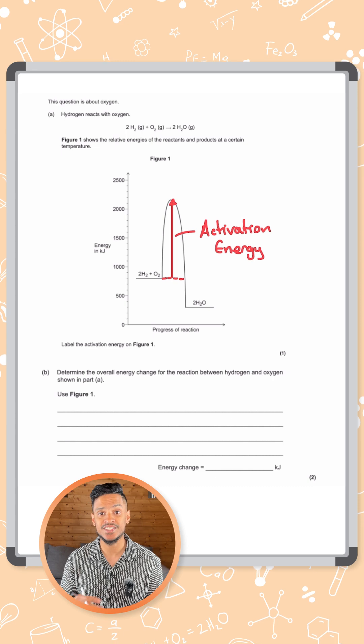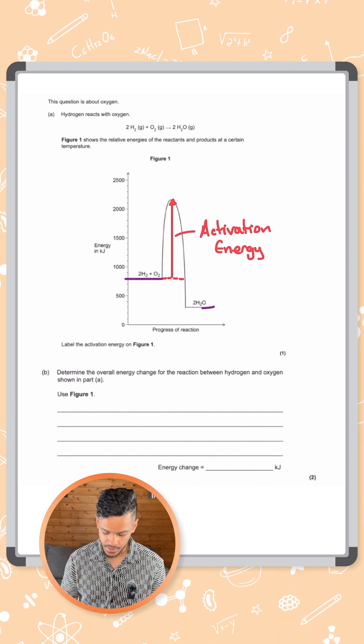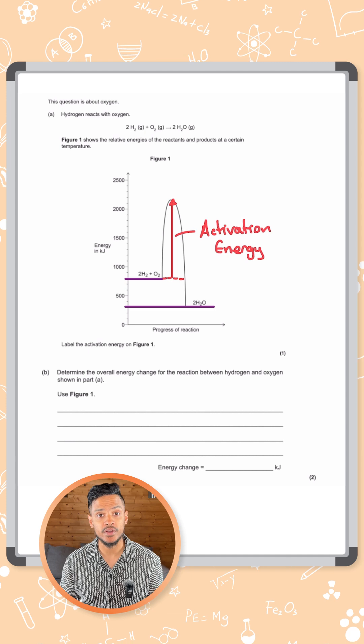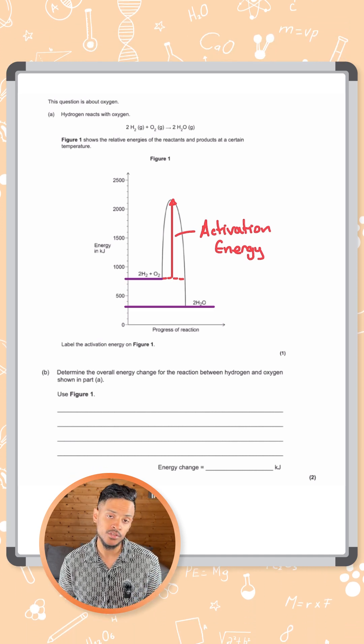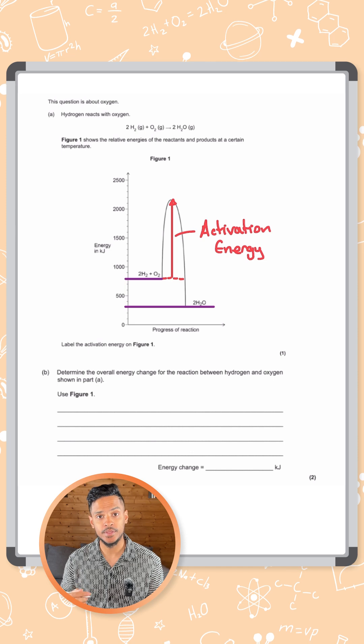So remember, overall energy change is the difference between the energy of the reactants and the energy of the products. What we need to do is basically read off those two levels and find the difference between them.